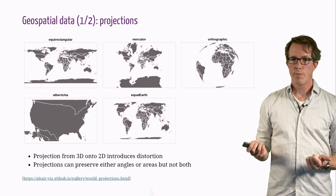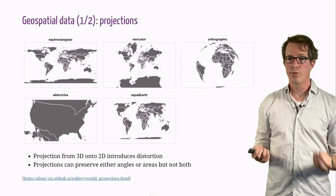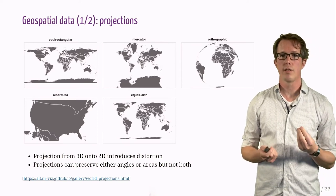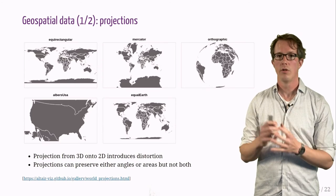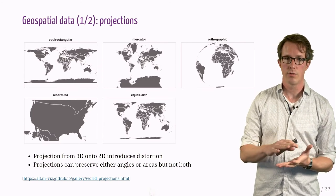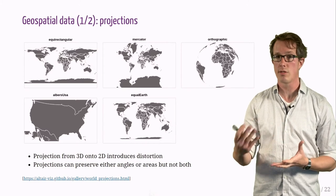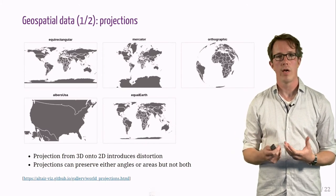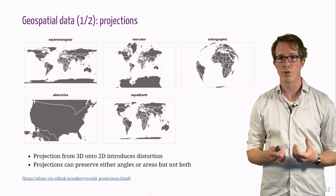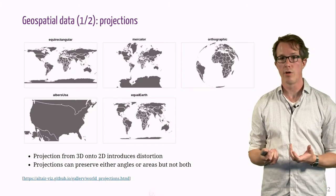Let's talk about geospatial data. They require extra care, as it requires a choice because we are projecting from a 3D globe onto a 2D surface, which introduces distortion. We can preserve either angles or areas, but not both. On this slide, I show a couple of such projections, but many more exist.